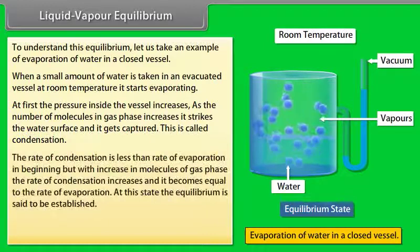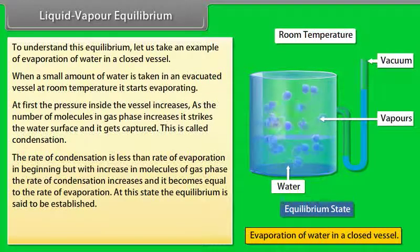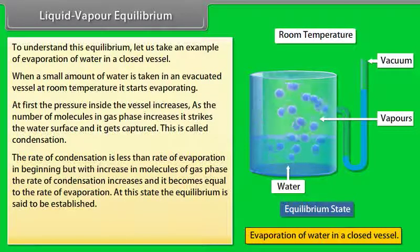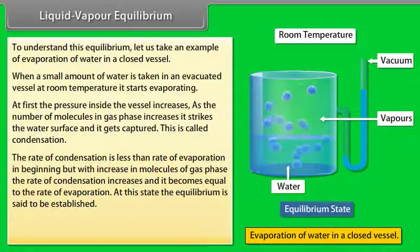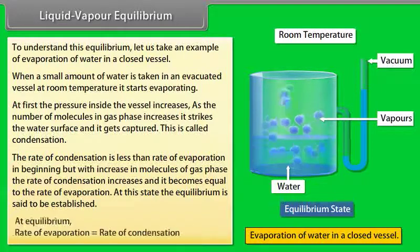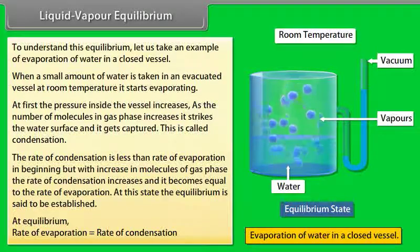The rate of condensation is less than the rate of evaporation in the beginning. But with increase in molecules of the gas phase, the rate of condensation increases and becomes equal to the rate of evaporation. At this state, equilibrium is said to be established. Thus, at equilibrium, rate of evaporation is equal to rate of condensation.